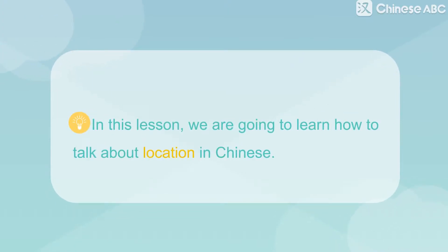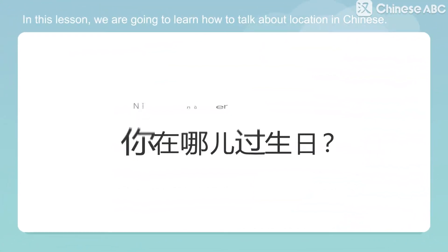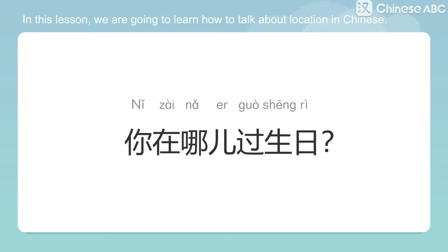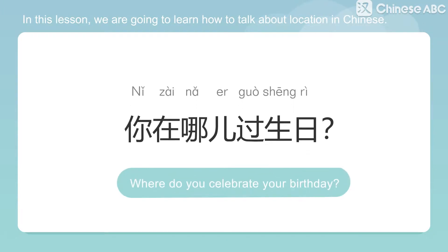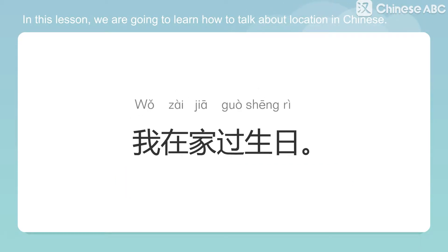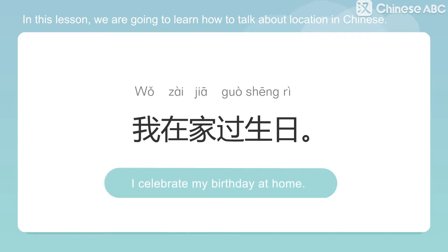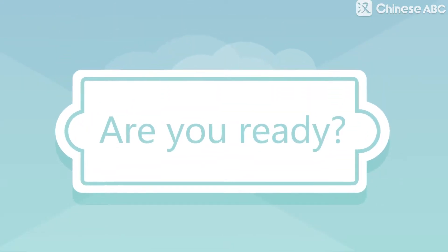In this lesson, we are going to learn how to talk about location in Chinese. 你在哪儿过生日? Where do you celebrate your birthday? 我在家过生日. I celebrate my birthday at home. Are you ready?